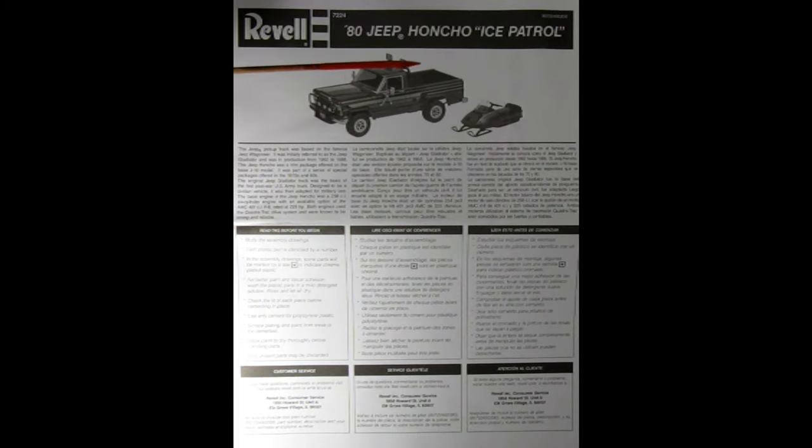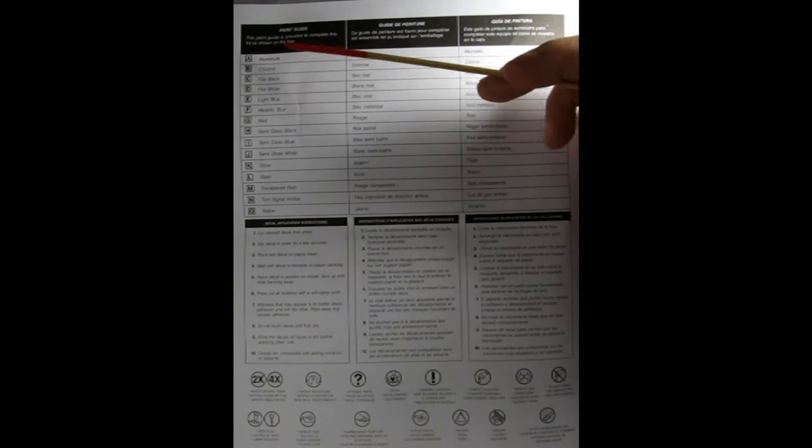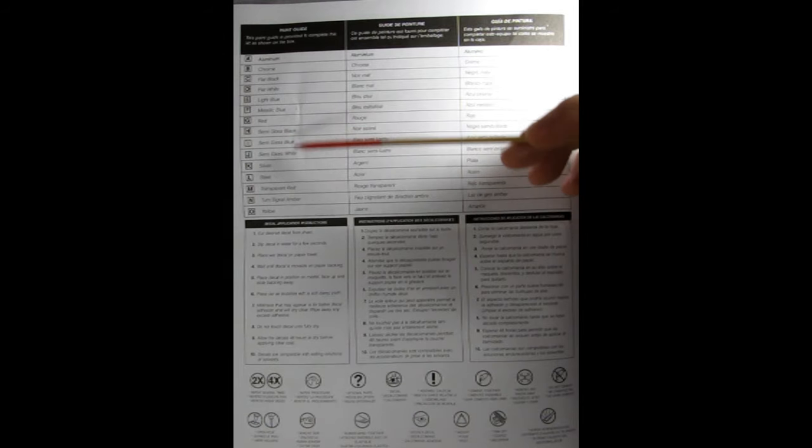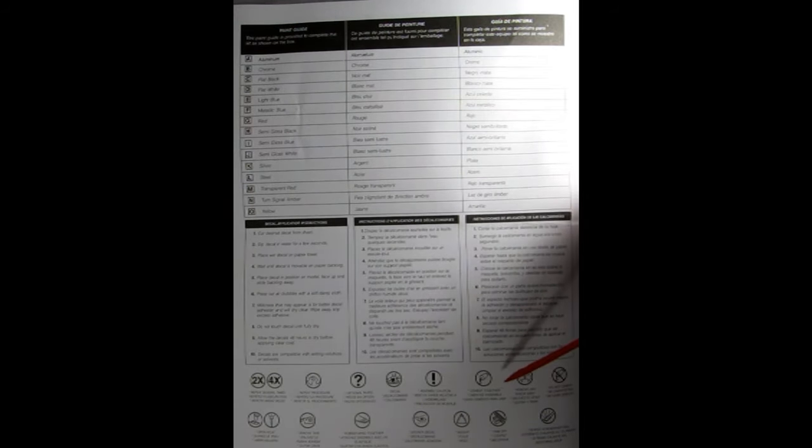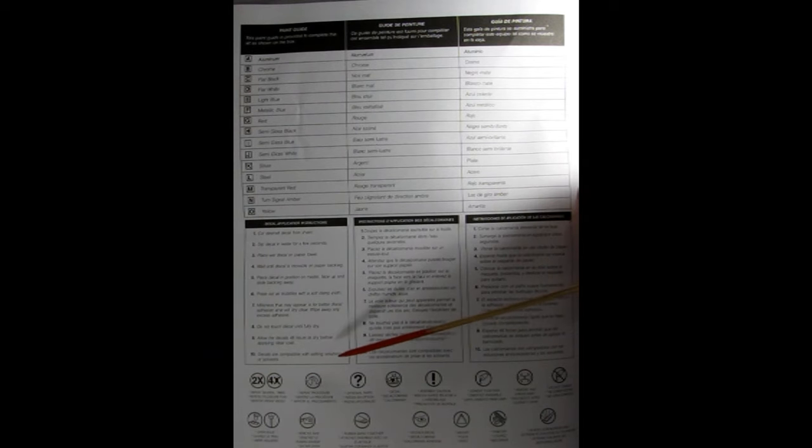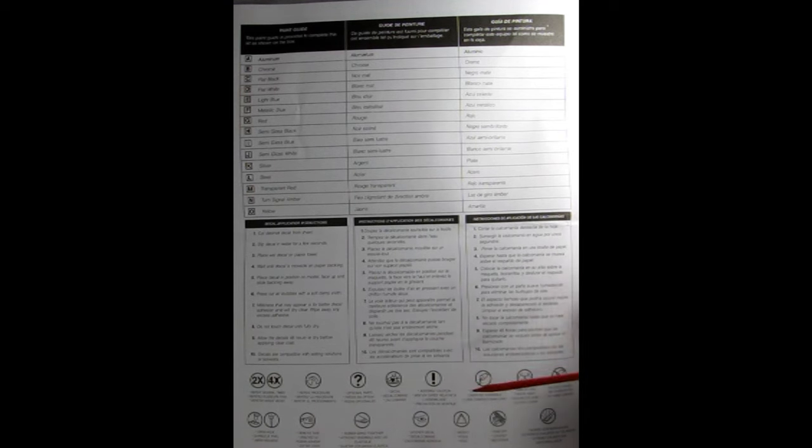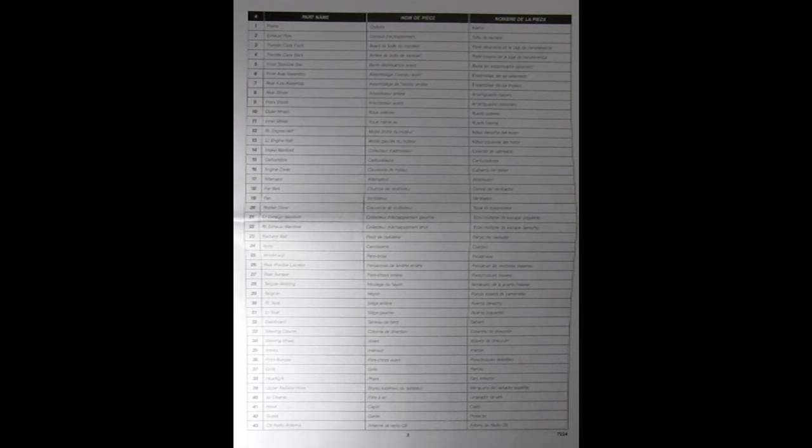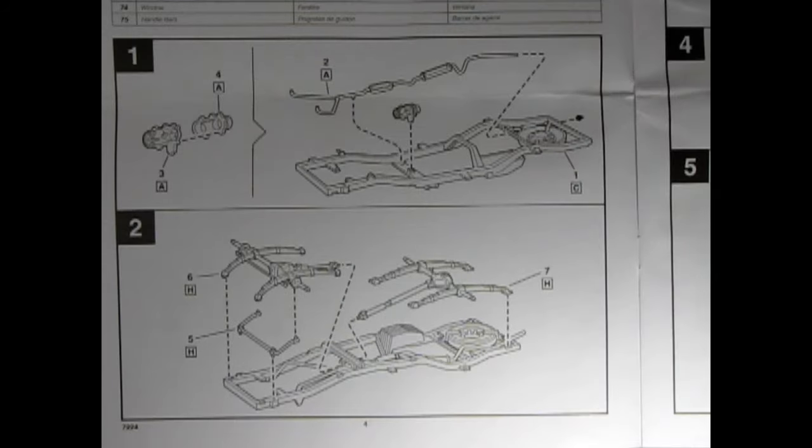Here we have our instruction sheet for our 1980 Jeep Honcho Ice Patrol. It has the photograph from the box, also has a write-up here, the read before you begin, and customer service number in case you need help. Inside, you have the paint call-outs with the letters in the square boxes, so you know what color corresponds to what part. You also have all the emblems and images of what you're going to experience.